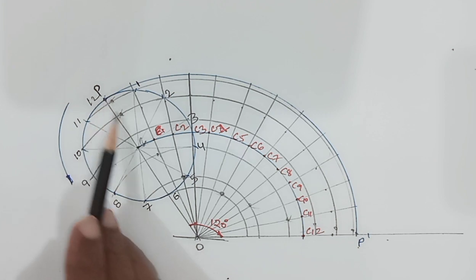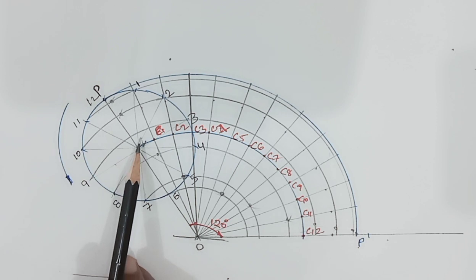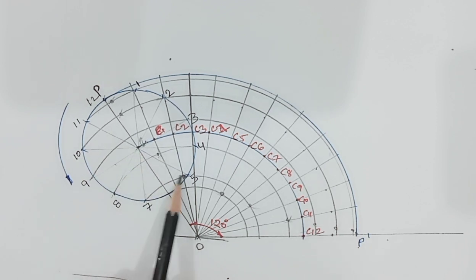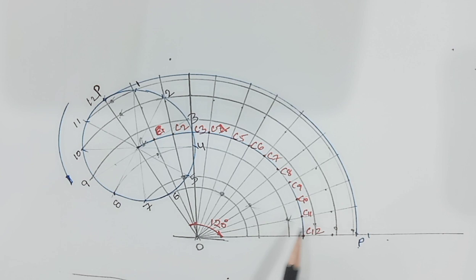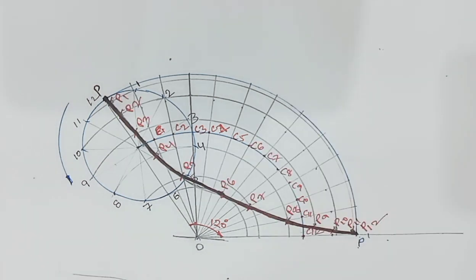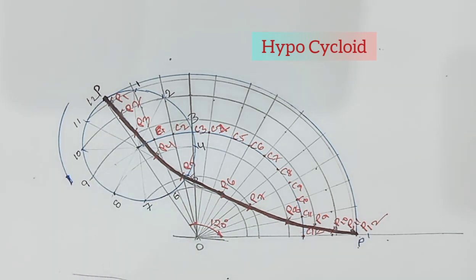Passing through these points, draw a smooth curve through P1, P2, P3, P4, P5, P6, P7, P8, P9, P10, P11, P12. That smooth curve is called the hypocycloid. Construction of hypocycloid is now complete.